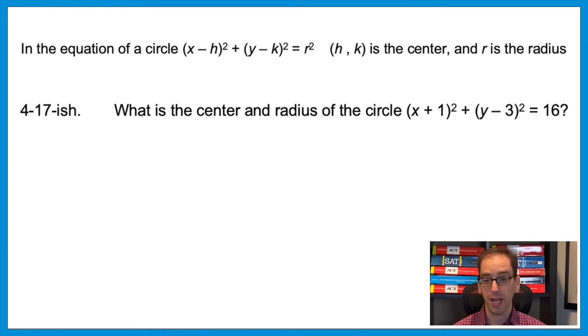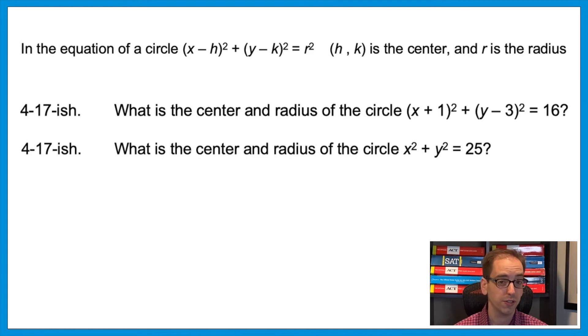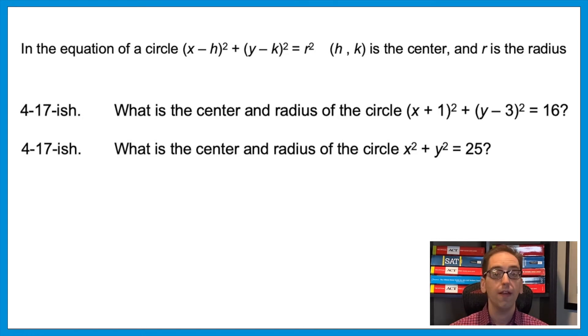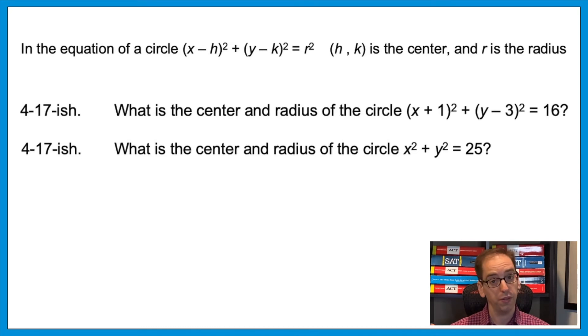On the April exam, section 4 question 17 had no h or k values — just x² + y² = 25. If there's no h or k, those values are zero, meaning the center is the origin. And since r² = 25, the radius is 5. On harder questions they won't give you the nice standard form — such a question appeared on the last three tests: March, April, and May SATs. On the April exam it was section 3, question 15.